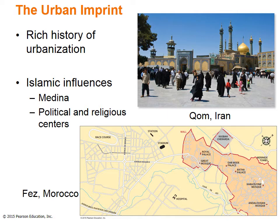The Hazrat-i Masumeh Mosque in Qom, Iran is visited annually by thousands of faithful Shia Muslims in this sacred city south of Tehran. The map of the walled city of Fez, Morocco reveals features of traditional Islamic urban centers with tiny neighborhoods and twisting lanes. To the west, however, rectangular street patterns, open spaces, and broad avenues suggest colonial European influences.